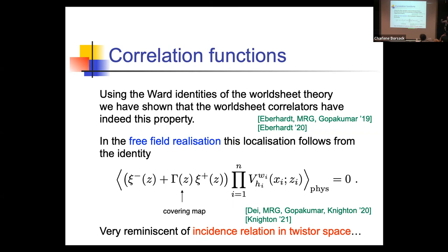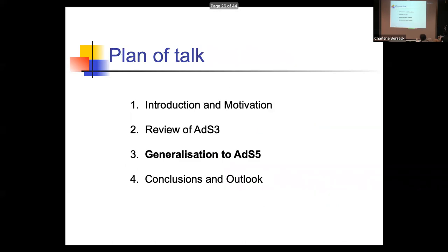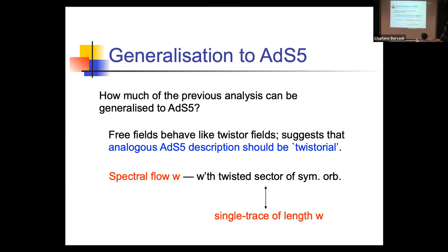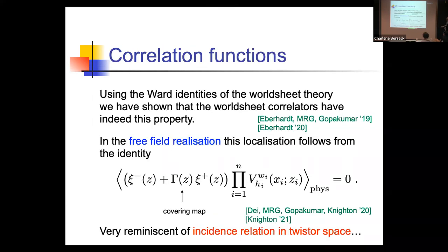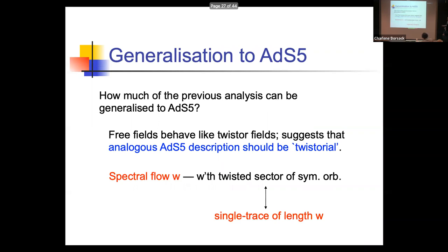We believe this is another blueprint to trust, because a similar structure would also be expected for four-dimensional N=4 super Yang-Mills. Now let me try to explain how we believe this could fit together for ADS-5. We are still struggling with that, but we believe in particular in a relation we want to think of as some sort of incidence relation in twistor space — the free fields on the worldsheet should be twistor-like — and something like spectral flow will play a role, giving a localization property again.